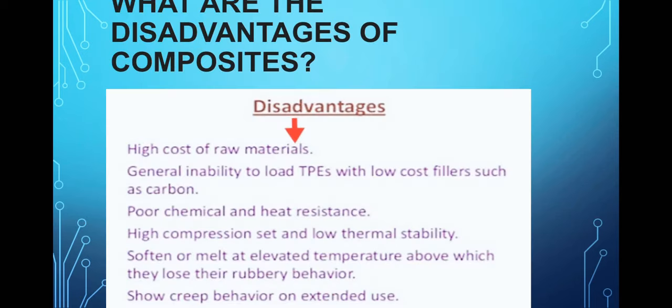The disadvantages of composite materials include high cost of raw materials, poor chemical and heat resistance, high composition set, and low thermal stability. At elevated temperatures, these materials become soft and melt, losing their elastic/rubbery behavior. They also exhibit creep behavior — meaning slow plastic deformation — under extended use.